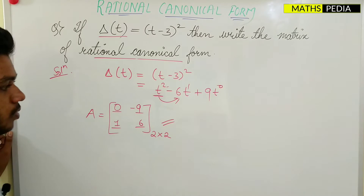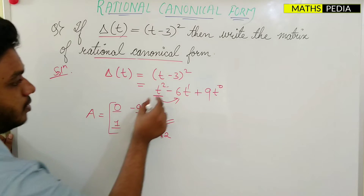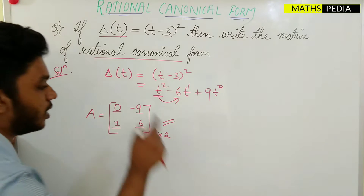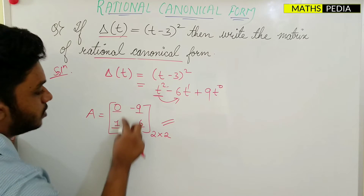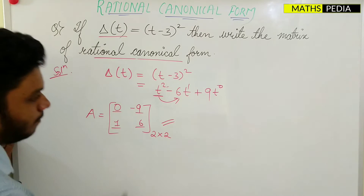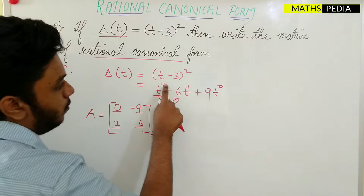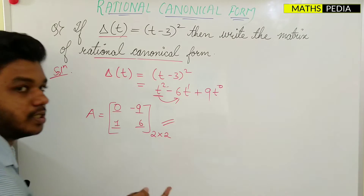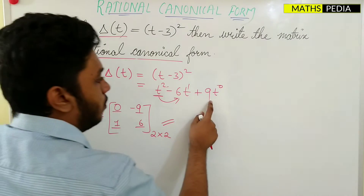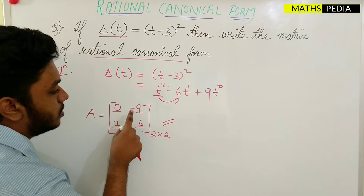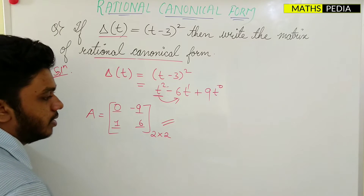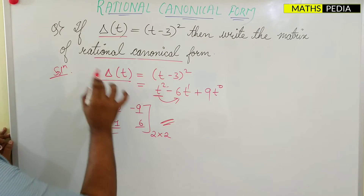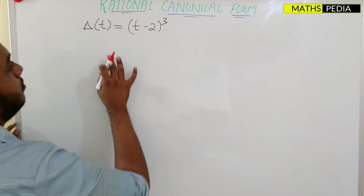So this is how we write the matrix for rational canonical form when the highest power is 2. The highest power is 2, so it is a 2×2 matrix with four elements. The first column is fixed as 0 and 1. For the second column, start from the bottom: T power 1 has coefficient -6, change the sign to get +6; T power 0 has coefficient 9, change the sign to get -9. This is the matrix for the given characteristic equation.